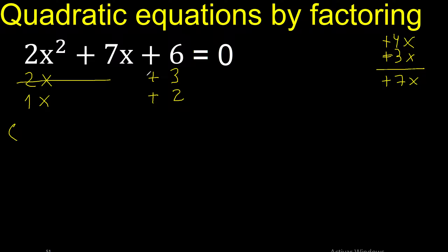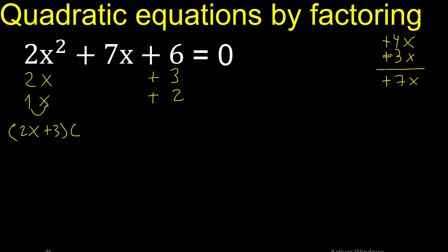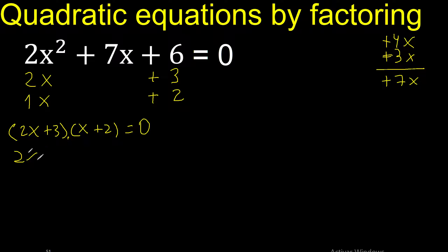Therefore, like this: 1 multiplied by x is x, equal 0 — multiplication. Therefore this factor equals 0 or this factor equals 0.